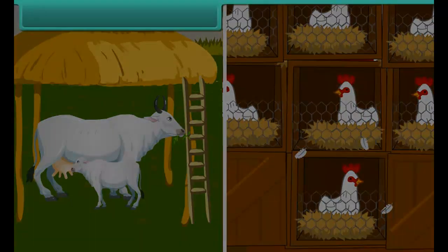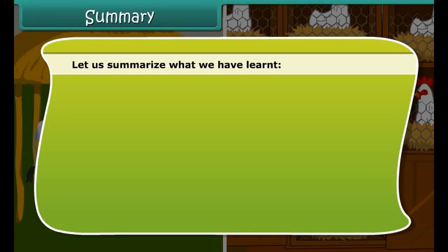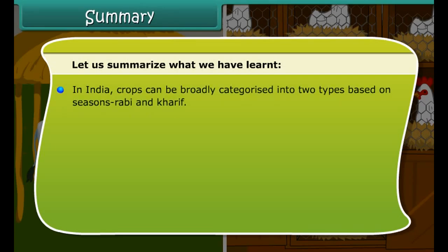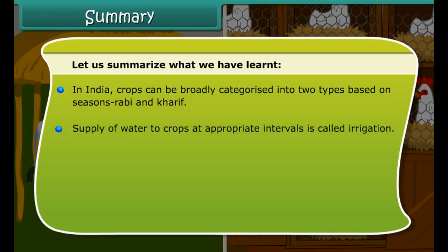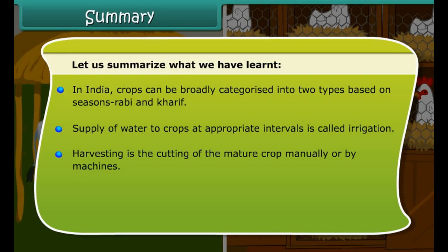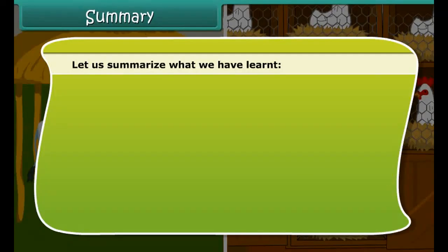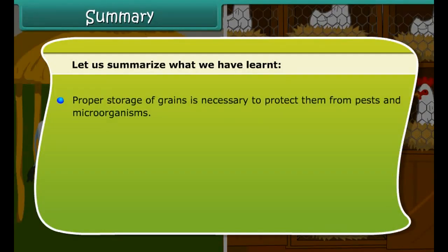Like plants, animals also provide us with different kinds of food. Many people in coastal areas consume fish as a major part of their diet. Just like crop production, animals are also reared at home or in farms, provided with proper food, shelter, and care so that they provide us healthy food. This process is called animal husbandry — rearing and breeding livestock on a large scale.